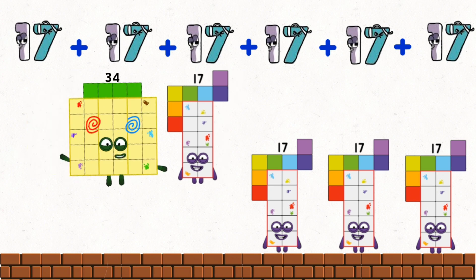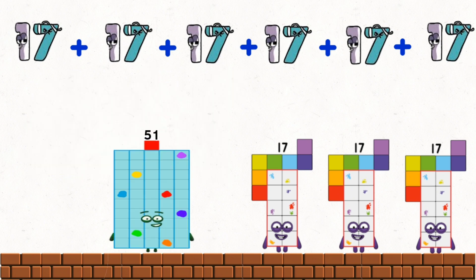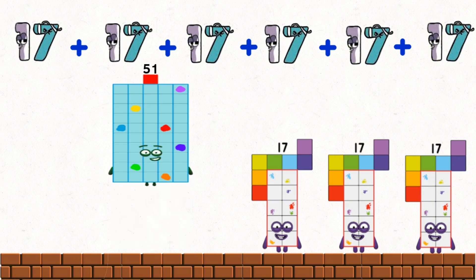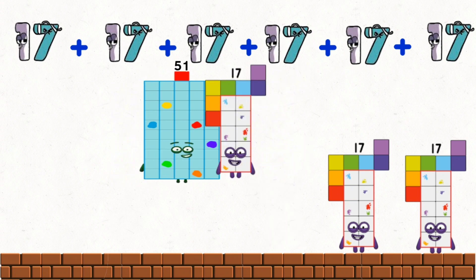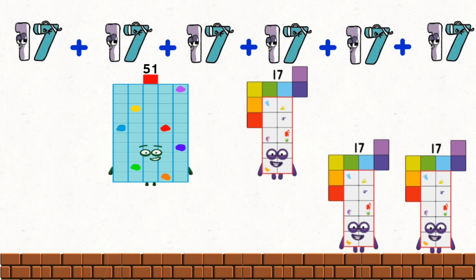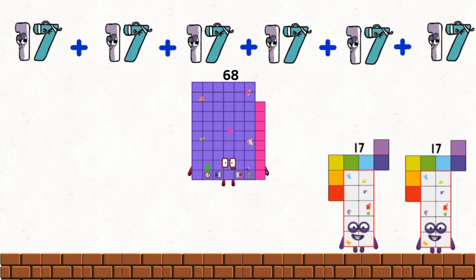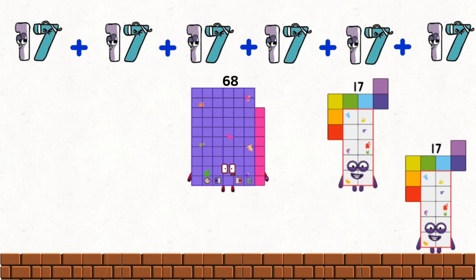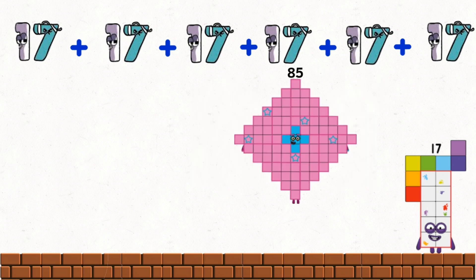34 plus 17 equals 51. 51 plus 17 equals 68. 68 plus 17 equals 85.